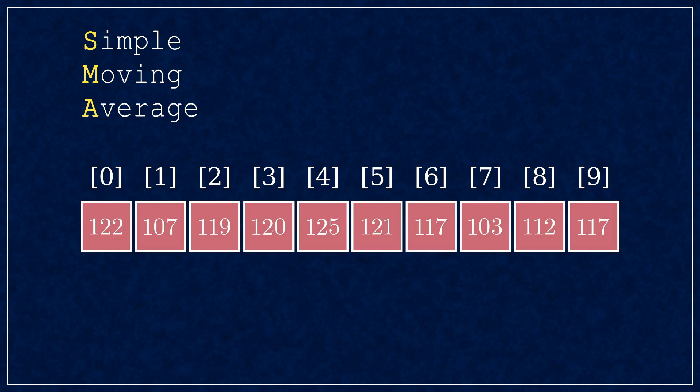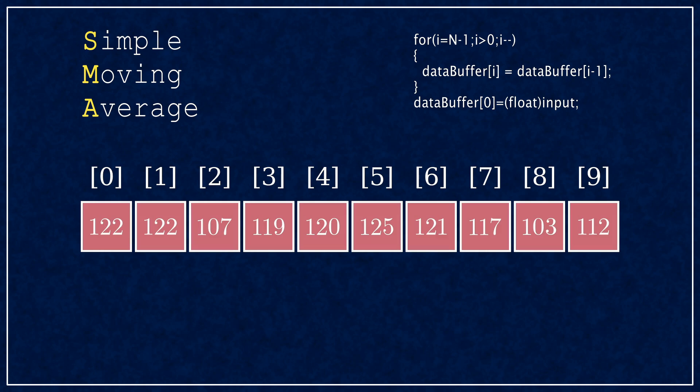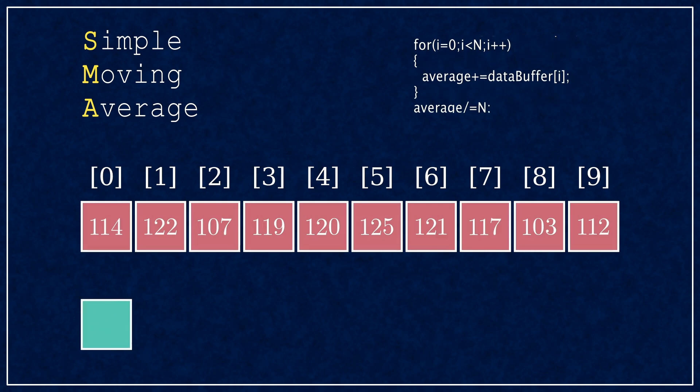Averaging, maybe a bit counter-intuitively, does not start with averaging but rather with updating the buffer. So you need to shift the old values to the right starting at the last but one. Then you add the newest measurement to the zeroth position. To get the average, you add up all these values and then divide by 10.